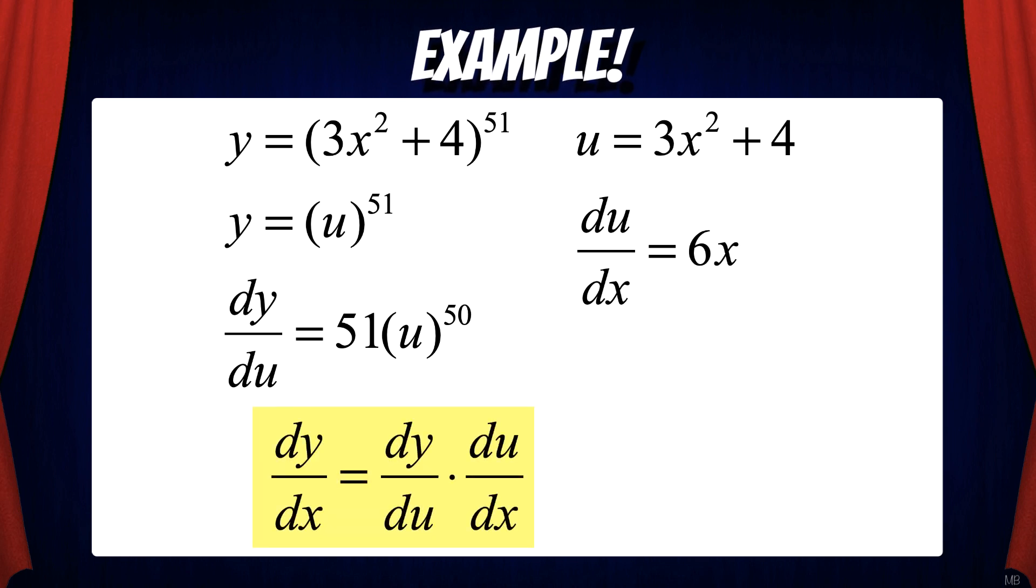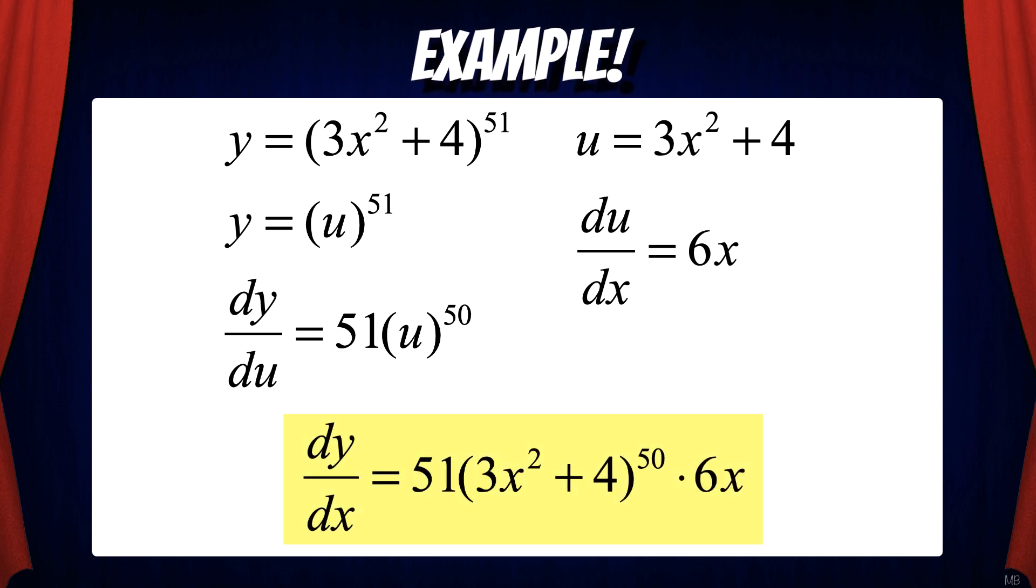The chain rule states that dy/dx equals dy/du times du/dx. That gives us 51u to the 50th power times 6x. Now we can replace u with 3x squared plus 4. And we have the derivative. 51 times the quantity 3x squared plus 4 to the 50th power times 6x.